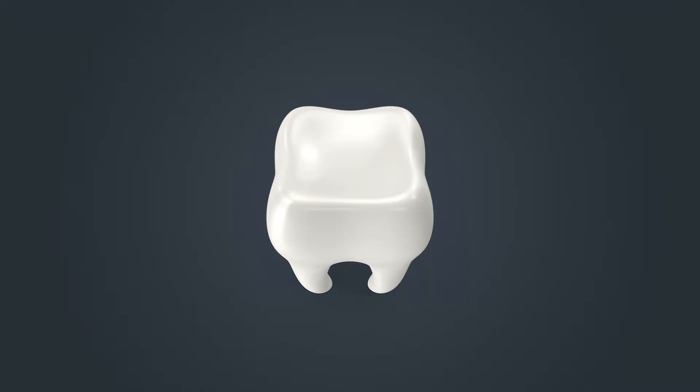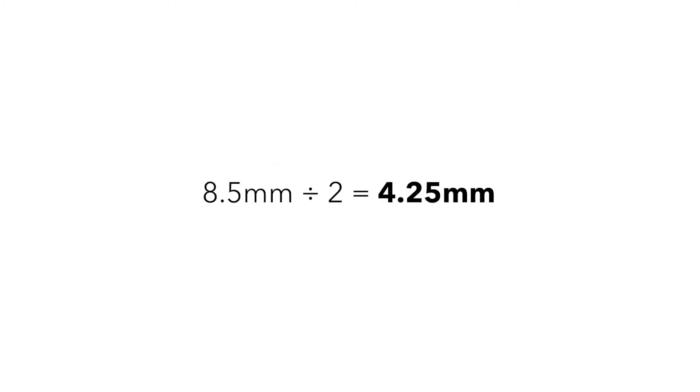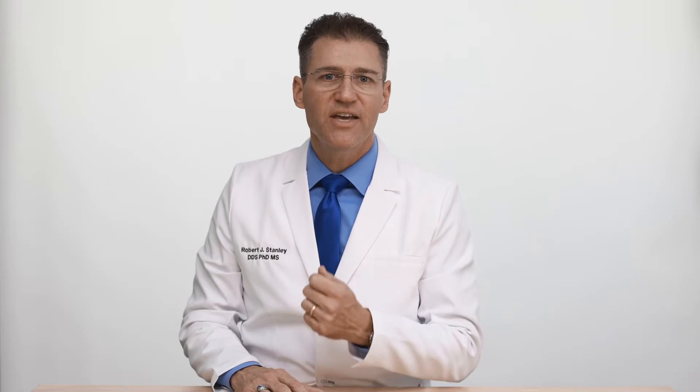Let's start with diameter. To choose our implant diameter or girth, we use the one-half rule. The one-half rule says that a good starting point for selecting an implant diameter is to take the standard mesial-distal crown width of the tooth and divide it by two. For example, if we're looking at an anterior tooth and its width is 8.5 millimeters, we divide 8.5 by two and get 4.25. The implant most often used at this site? It's a 4.2.